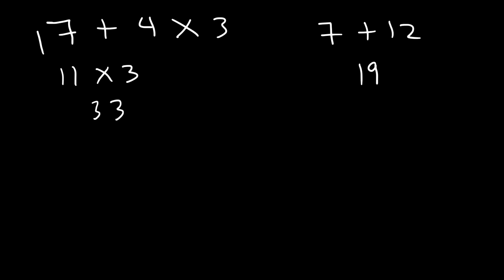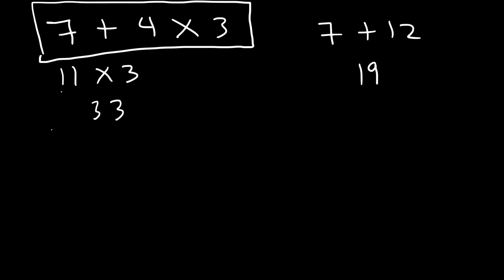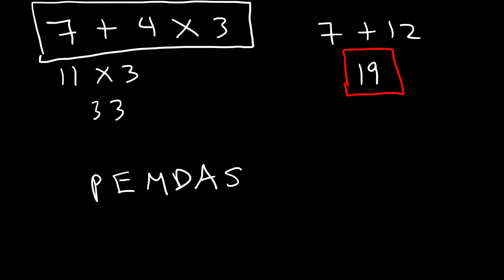If you type this exact expression in a scientific calculator, it is going to give you 19, and not 33. The reason for that is something called order of operations — there's a certain way in which you need to perform mathematical operations. Perhaps you've heard of the term PEMDAS, which is very helpful for knowing the order of operations.